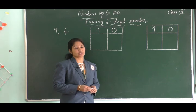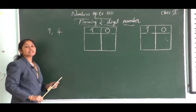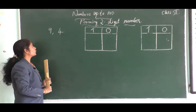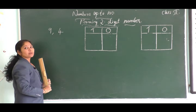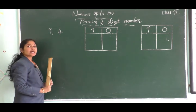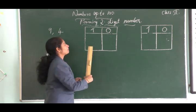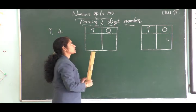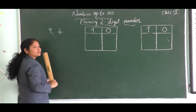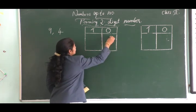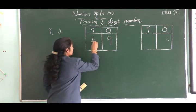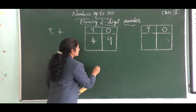Our first topic is forming two-digit numbers. We will see an example — here we have two digits, nine and four. We have to combine the digits to form a two-digit number. We already learned tens and ones. We can choose any digit and place it at ones and tens to form a two-digit number. We can keep nine at the ones place and four at the tens place, giving us the two-digit number 49.